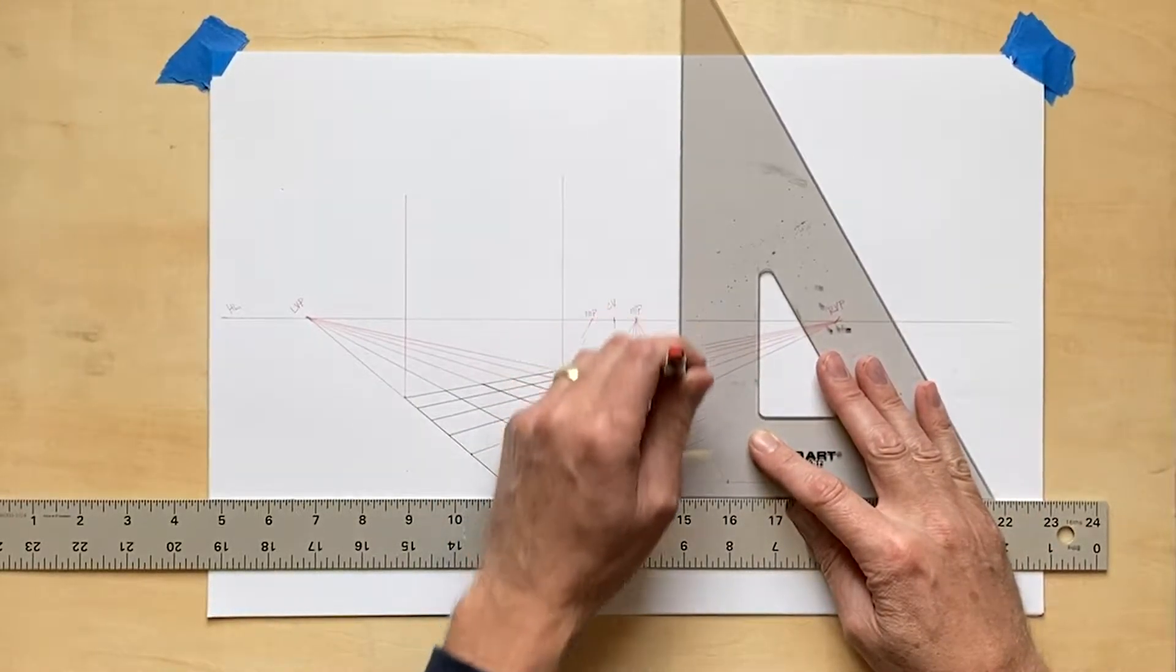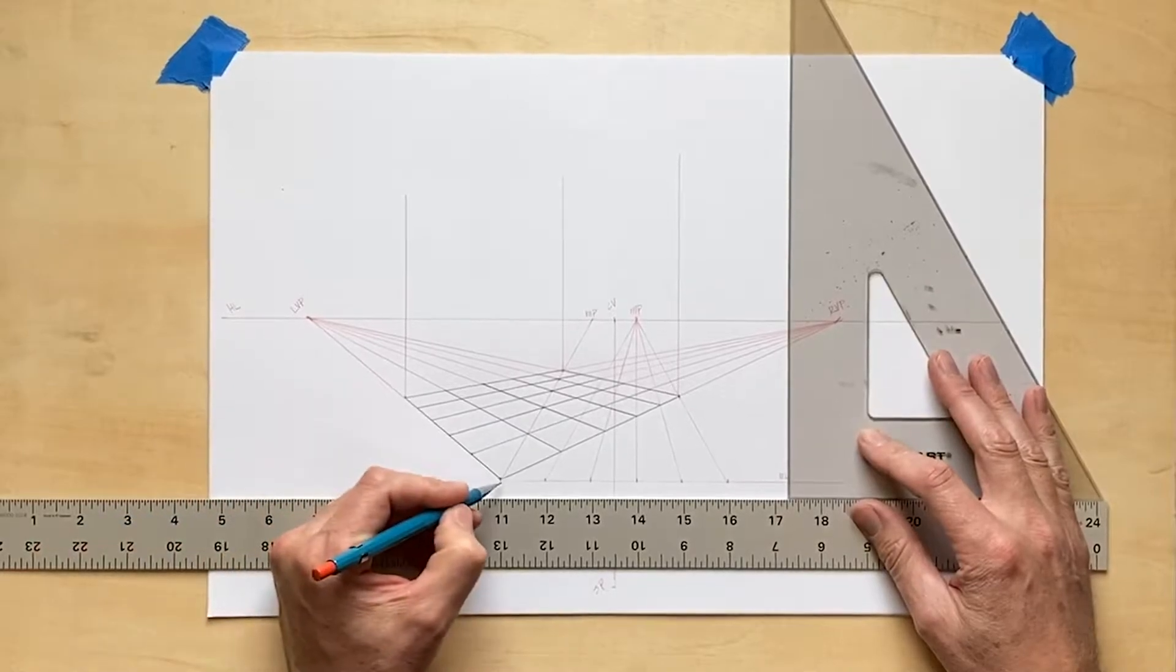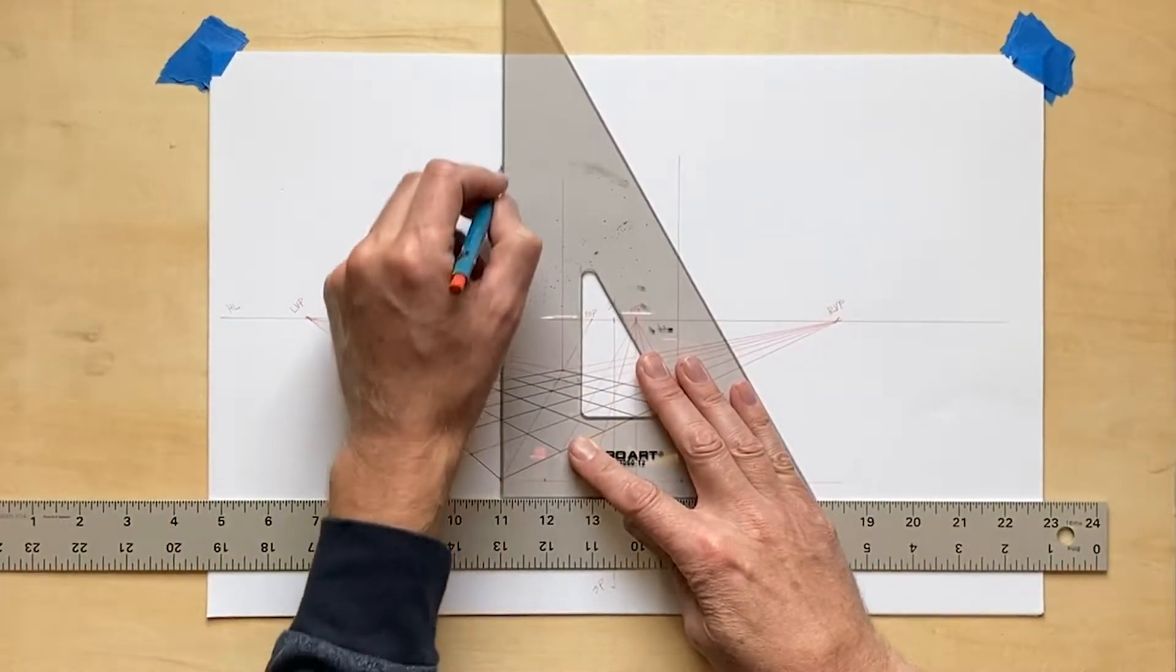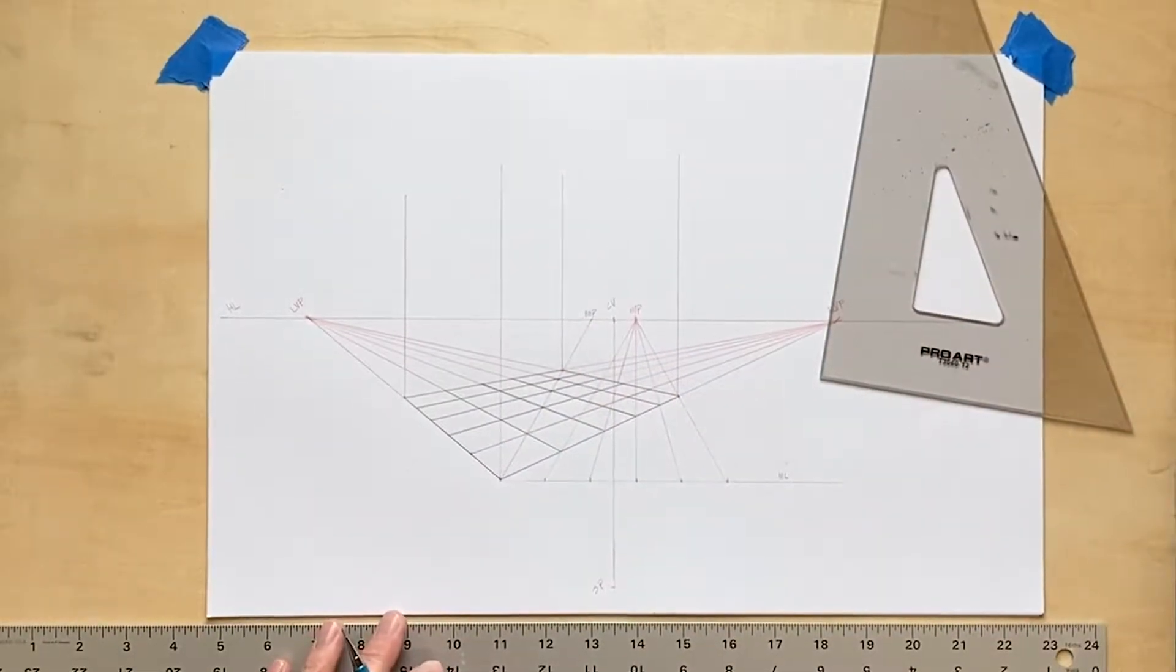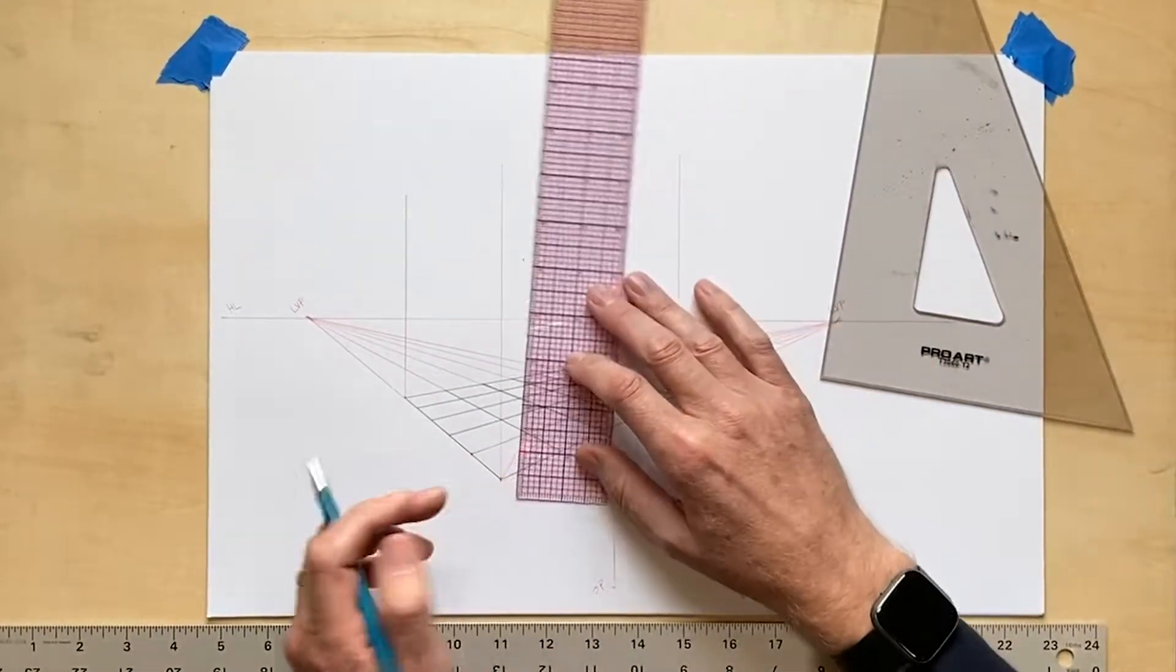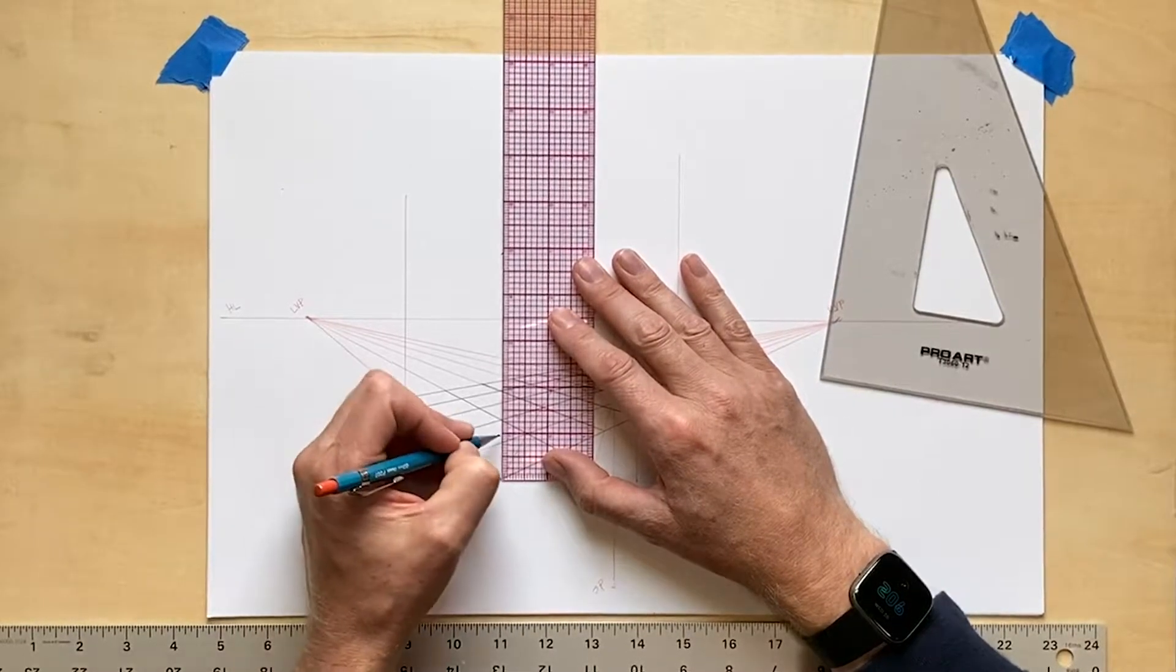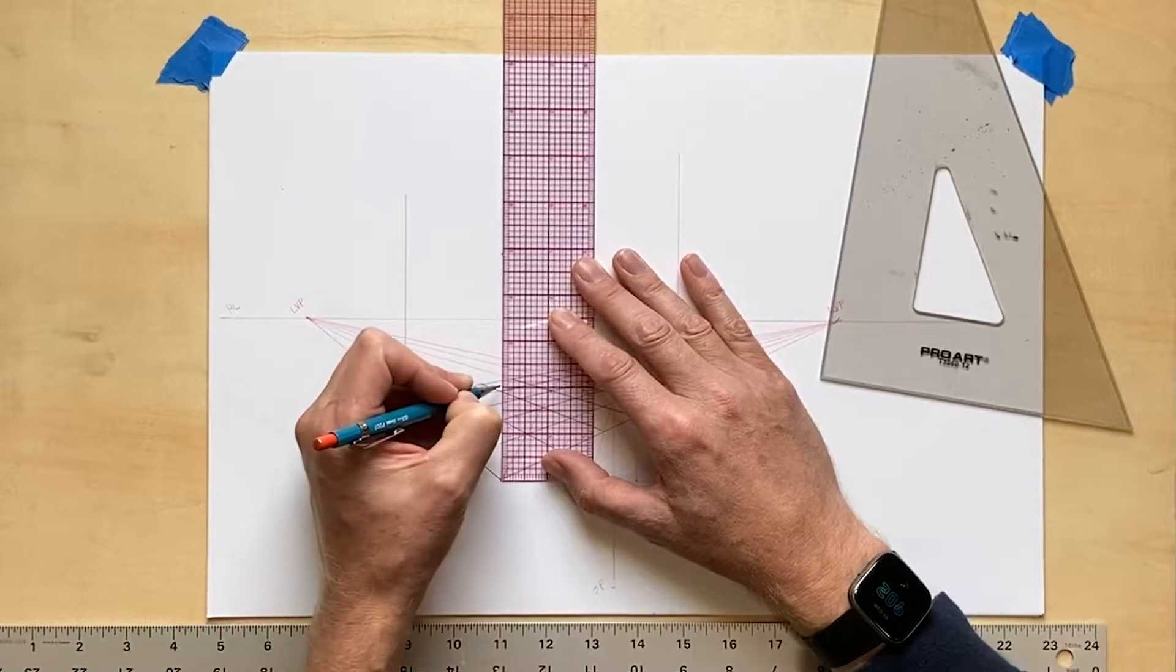With my floor plane being divided into five units from both angles, I will do an elevation also of five units. In the floor plane I used one-inch measurements, so I'll use that same measurement along the front edge to mark off five inches.